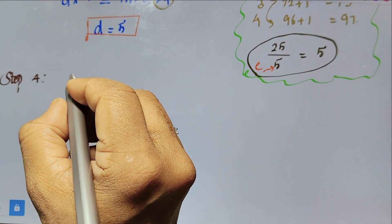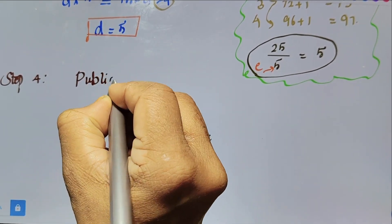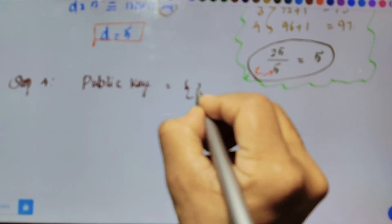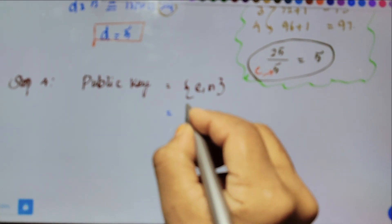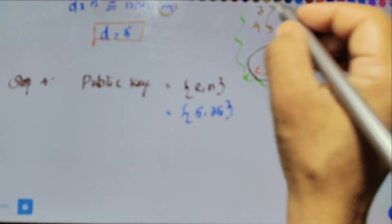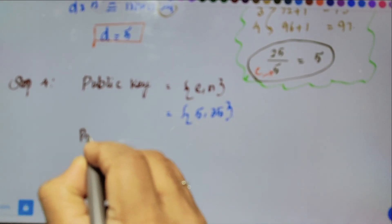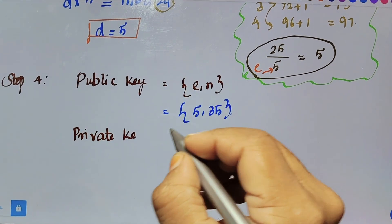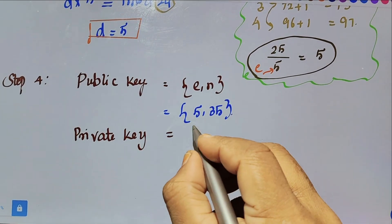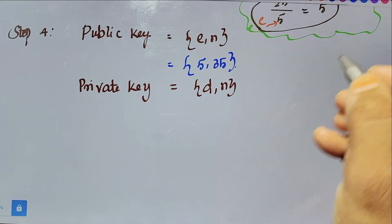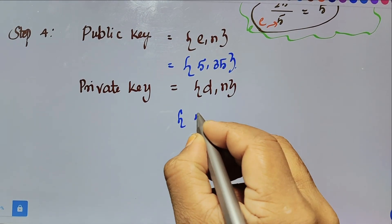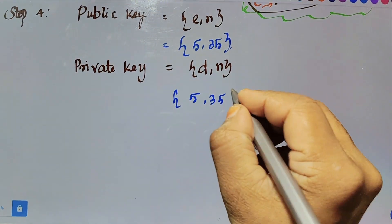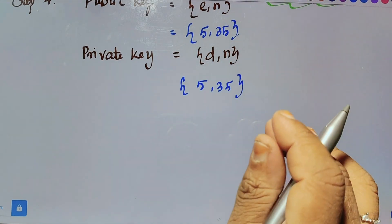Step 4: Public key formula is (e, n), so the public key is (5, 35). Private key formula is (d, n). Since d equal to 5 and n equal to 35, the private key is (5, 35). Note that in this case both e and d values are 5.